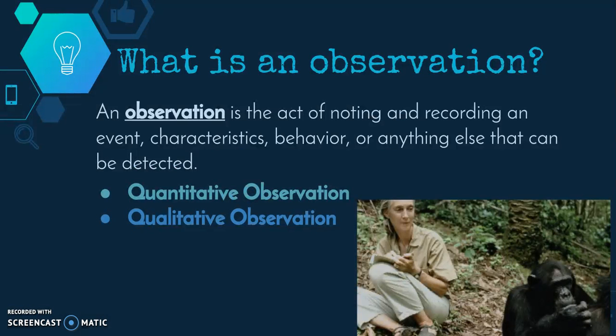So what is an observation? These are things that we observe about the world around us. It's the act of noting and recording an event, characteristics, behavior, or anything else that can be detected. We put them into two different categories: quantitative observations and qualitative observations, which we're going to discuss next.